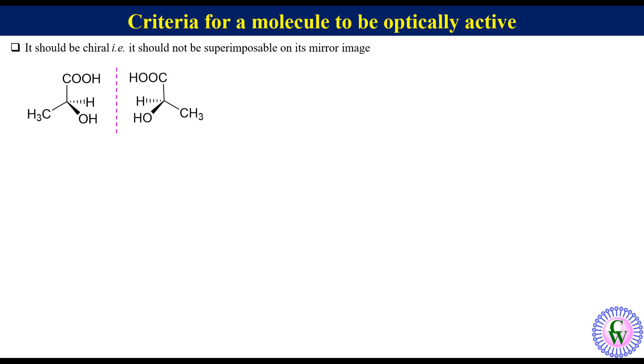The molecule shown on the left side of the mirror has S configuration, so it is called S-lactic acid. It rotates the plane of plane-polarized light towards the right, so it is called plus lactic acid or small d-lactic acid. It is also called capital L-lactic acid.